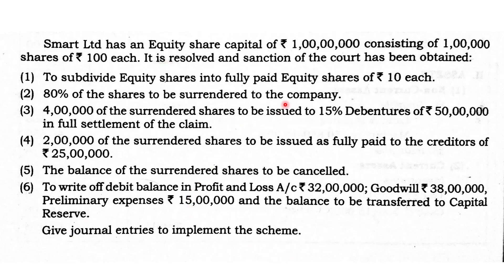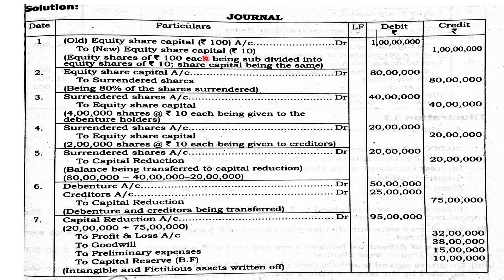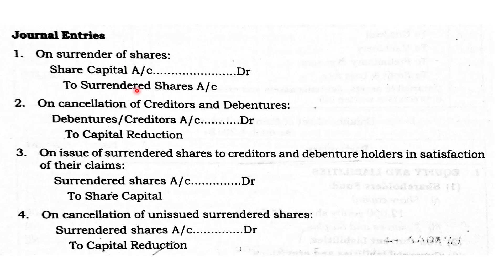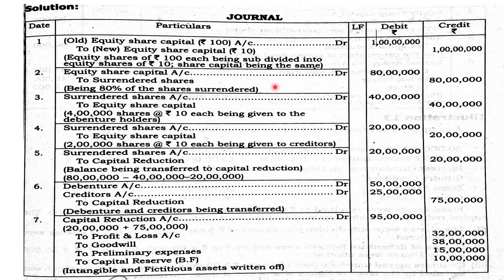Journal Entry 1 — Subdivision: Old equity share capital (Rs. 100 share), Rs. 1 crore, Dr. To new equity share capital (Rs. 10 share), Rs. 1 crore. The amount remains the same. Journal Entry 2 — Surrender: 80% of Rs. 1 crore = Rs. 80 lakhs to be surrendered. Equity share capital Dr. to surrendered shares account Rs. 80 lakhs.